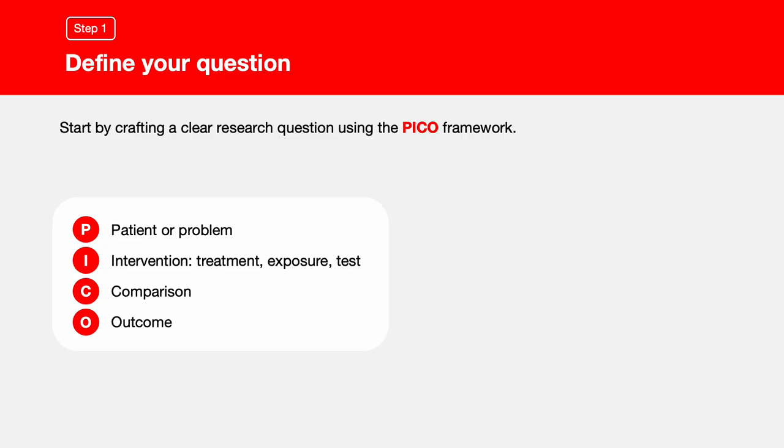Start by crafting a clear research question using the PICO framework. Who is the patient or what is the problem you're addressing? What treatment, exposure, or test are you considering for the intervention? Are there any alternative interventions to compare with? Finally, what outcome are you aiming to achieve?